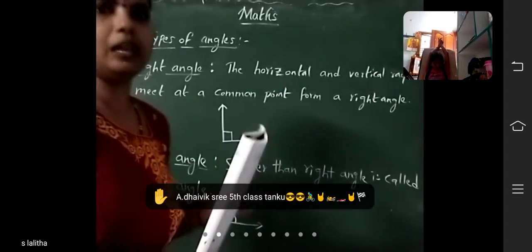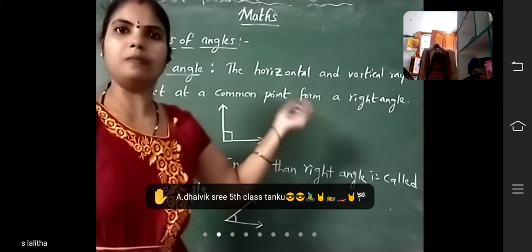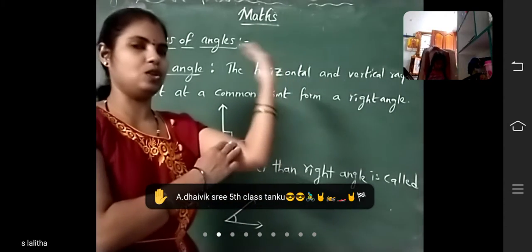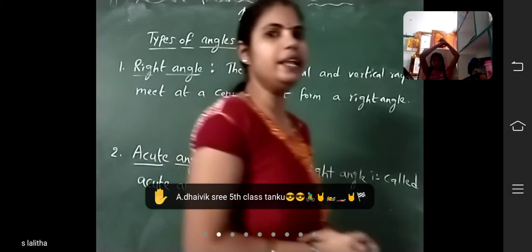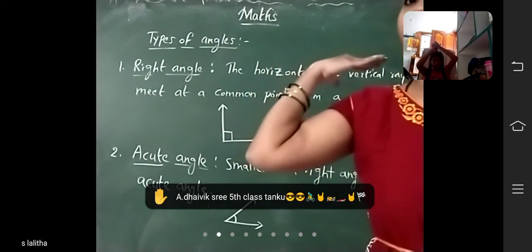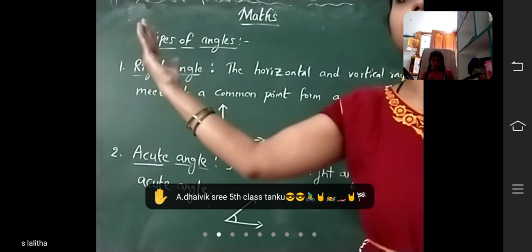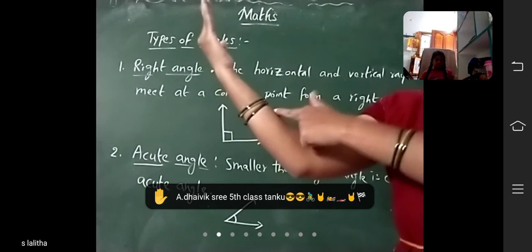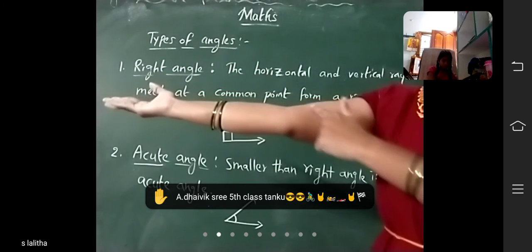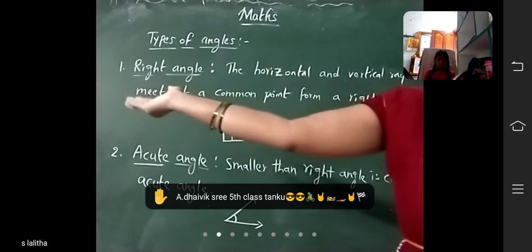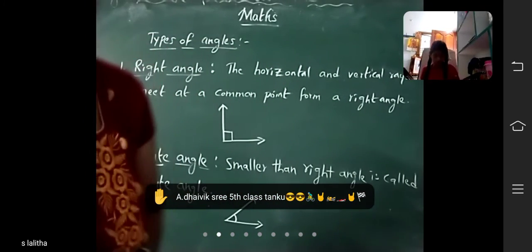What did I tell you? Right angle means horizontal and vertical rays meet at a common point to form a right angle. Acute angle means smaller than a right angle. And the obtuse angle means bigger than a right angle. And this — it will look straight, so it is a straight angle. This is your homework — companion page number 10. Identify the angles and write.